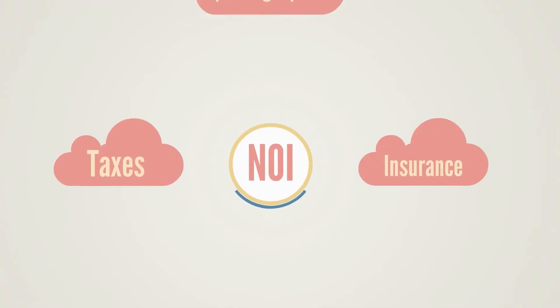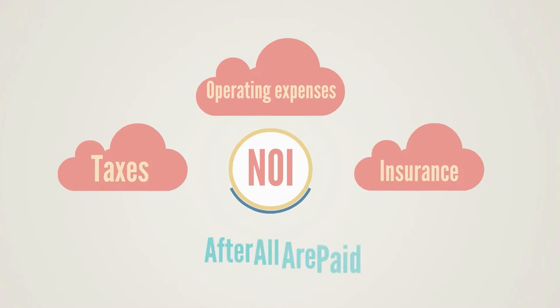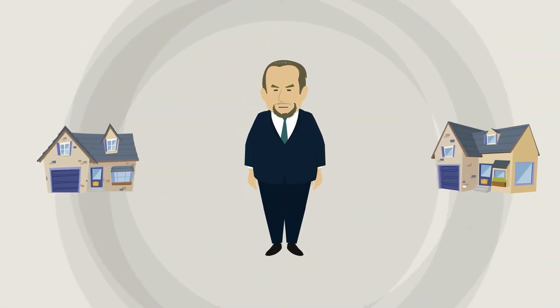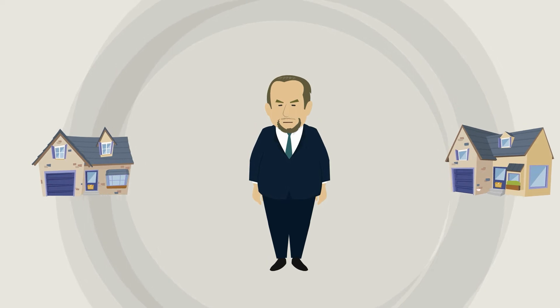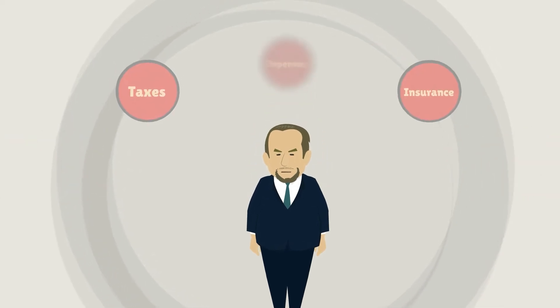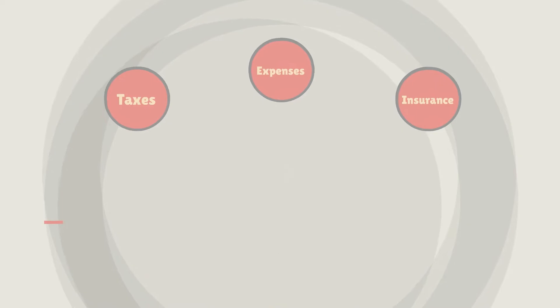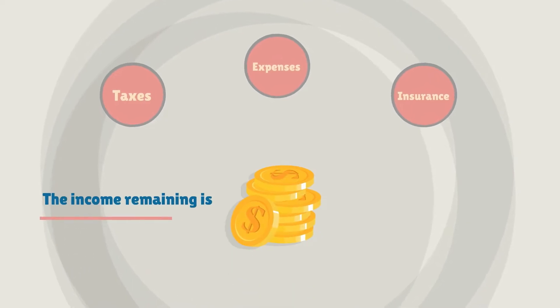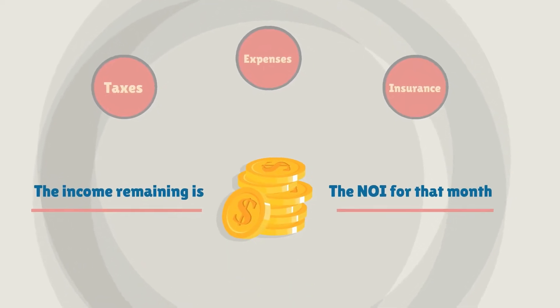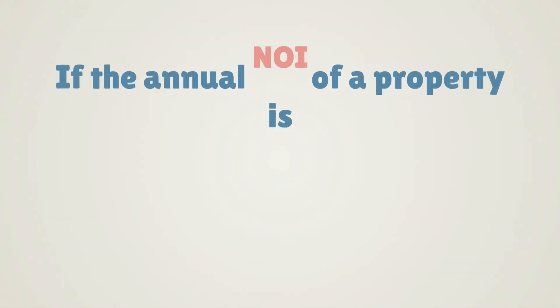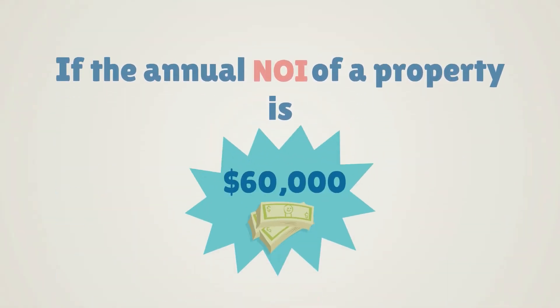The NOI is the income remaining after all taxes, insurance, and operating expenses are paid. For example, a property owner collects all the rents each month and then pays taxes, insurance, and expenses associated with owning the property. The income remaining is the NOI for that month. To determine the cap rate, you use the annual NOI.